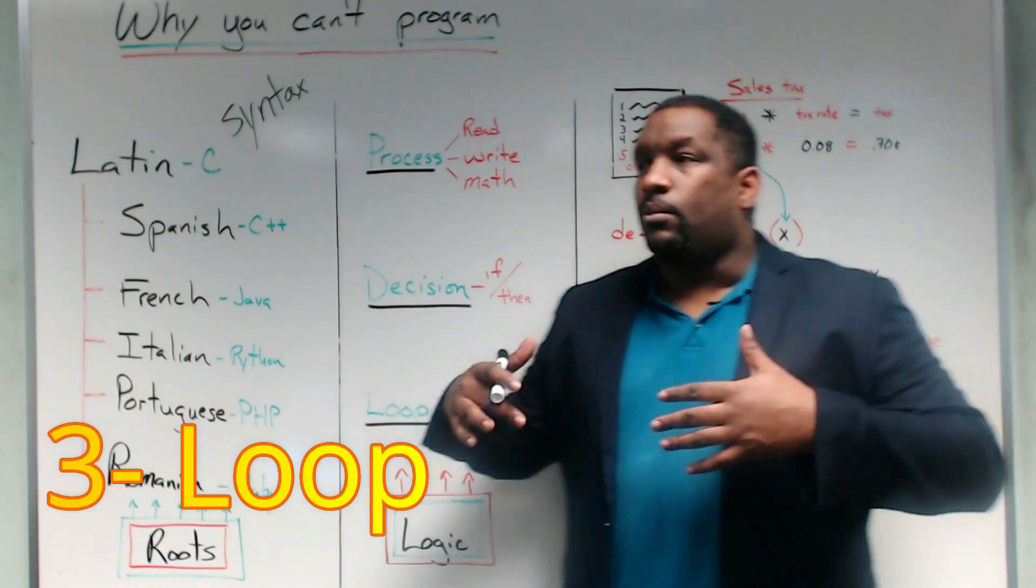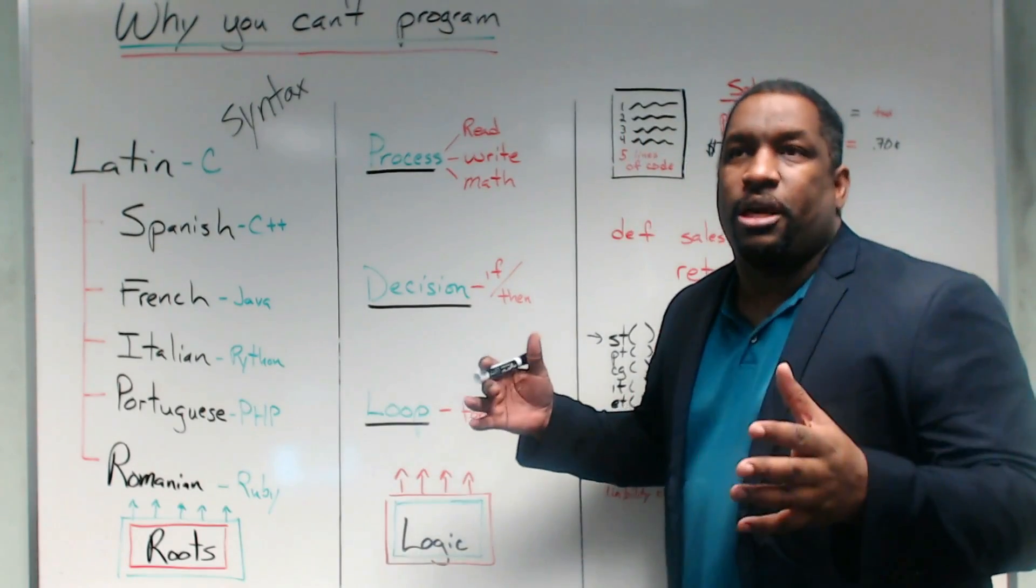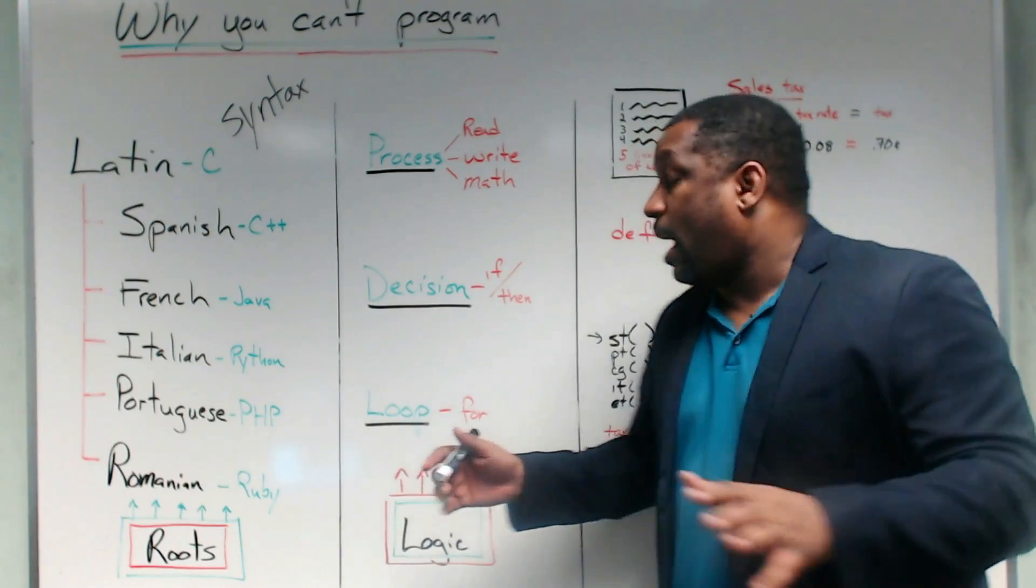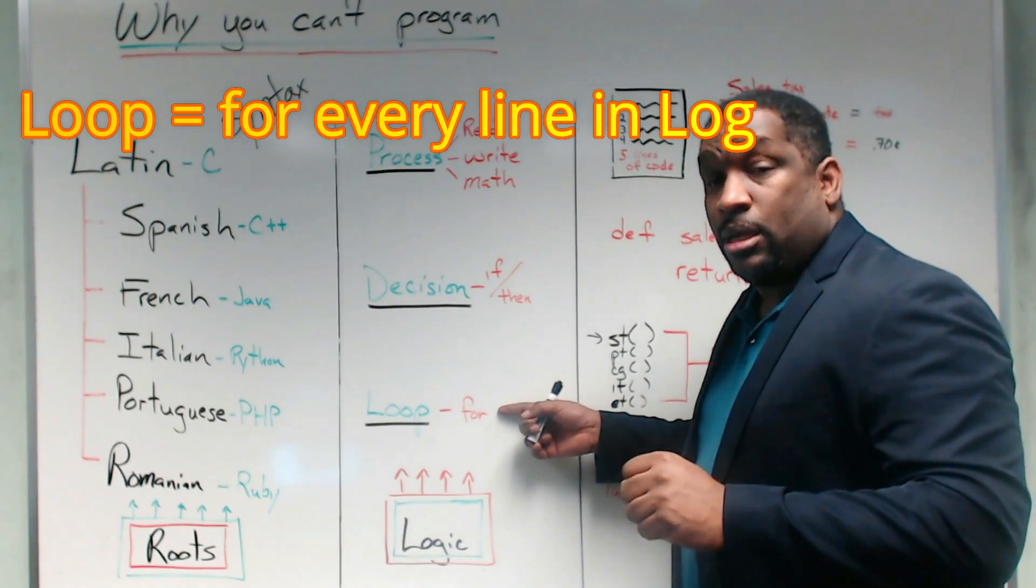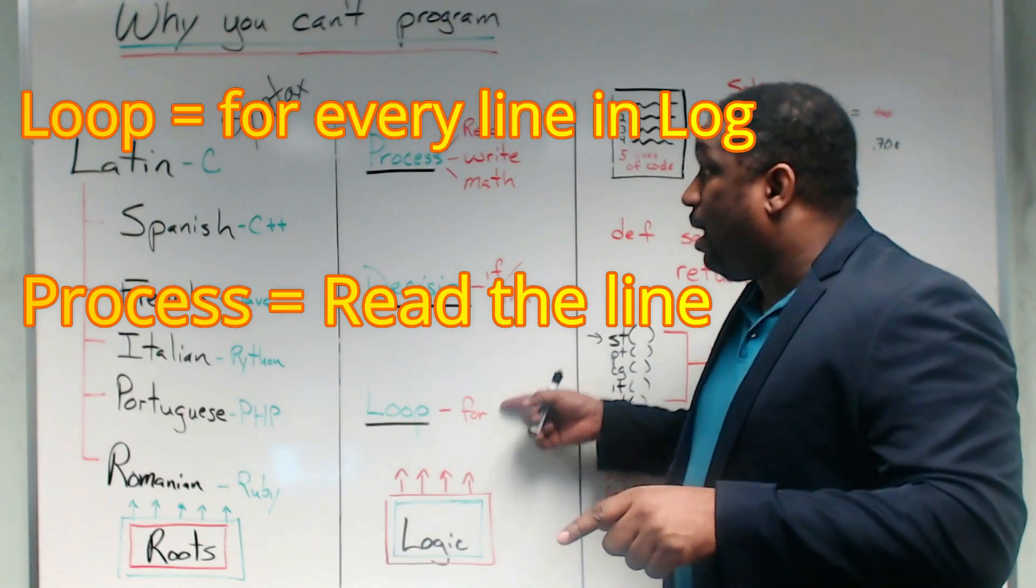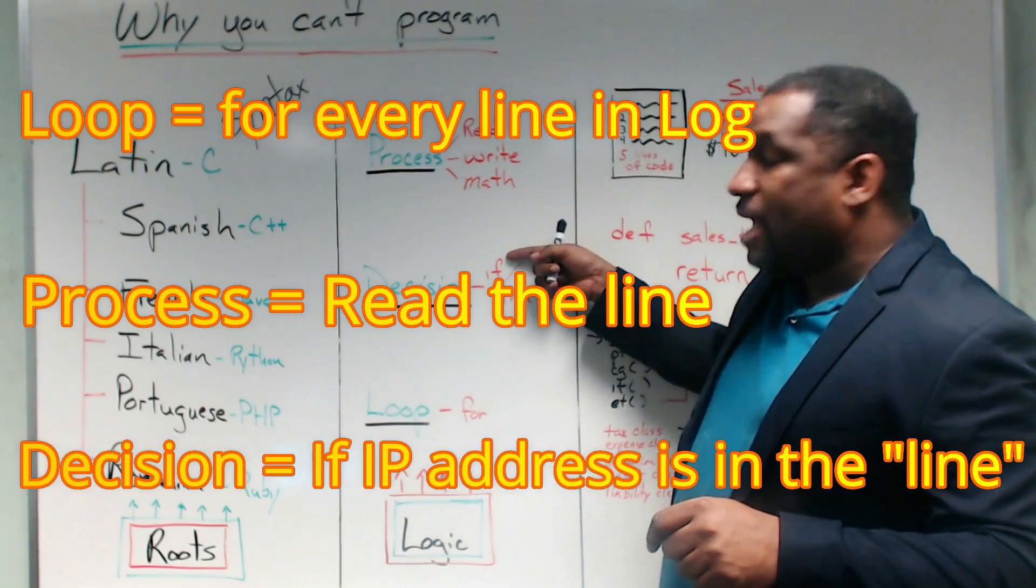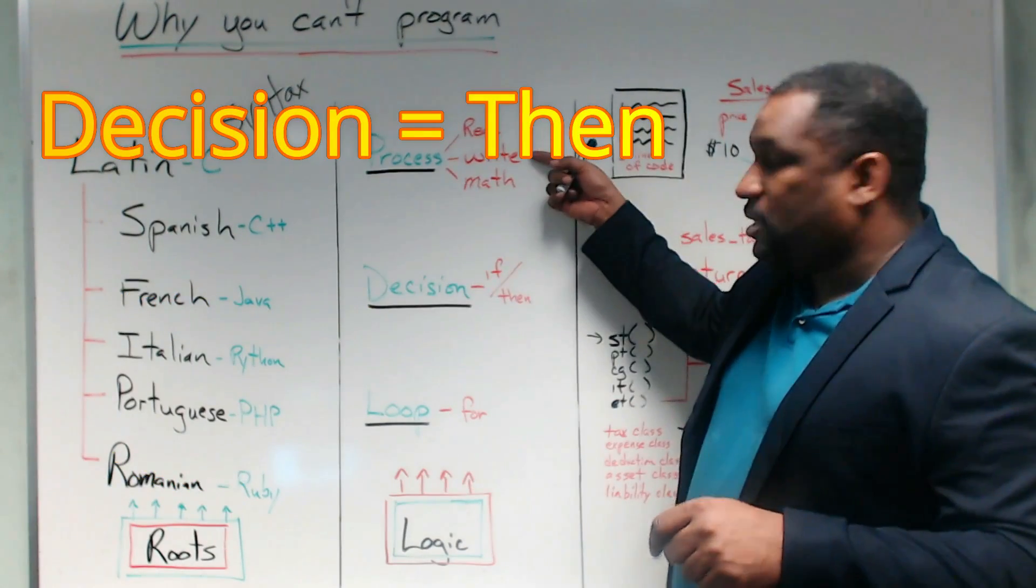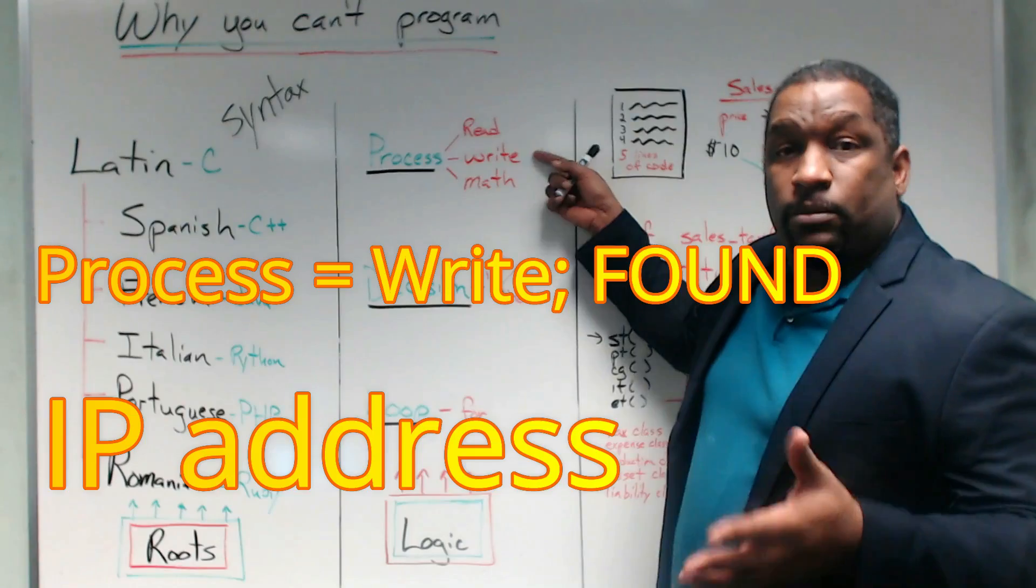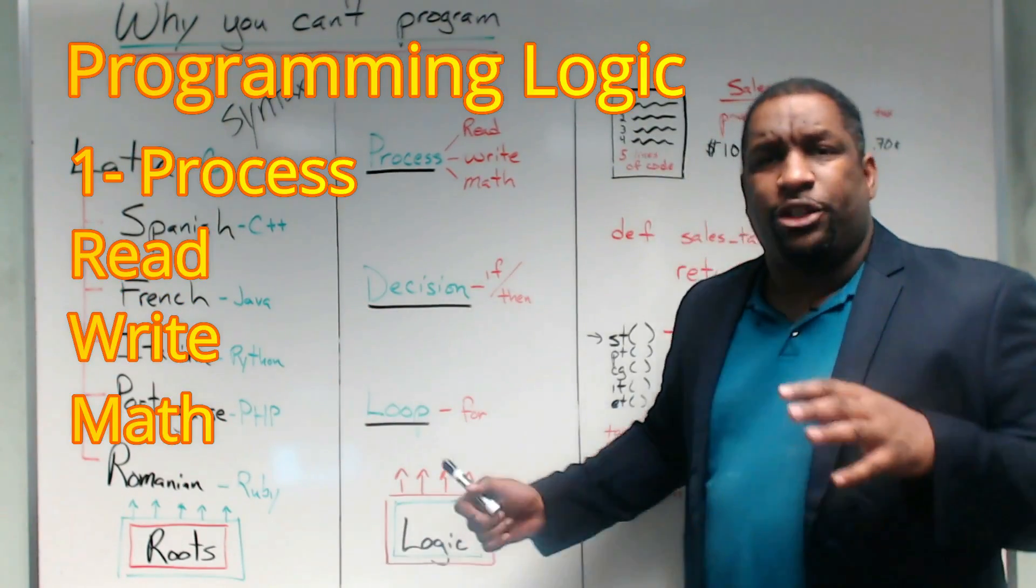So if you had a language and you needed, let's say for example, to write a log parser, I would probably say something like, for every line in the log file, read the line. If the IP address is in the line, then write found IP address. It's real simple logic.